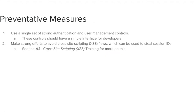There are two primary ways to prevent broken authentication and session management vulnerabilities. One, using a single set of strong authentication and user management controls, ideally accompanied by a simple interface for developers. And second, make a strong effort to avoid cross-site scripting flaws. For more information on cross-site scripting flaws, see the A3 cross-site scripting training.